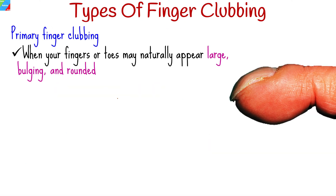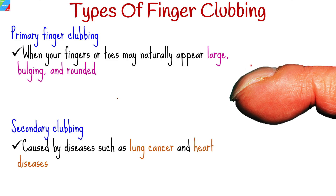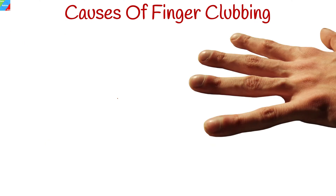Primary finger clubbing is when your fingers or toes may naturally appear large, bulging, and rounded. Usually it is not associated with any health problems. Secondary clubbing is caused by diseases such as lung cancer and heart disease. Many underlying pathologies in various organ systems can cause finger clubbing.